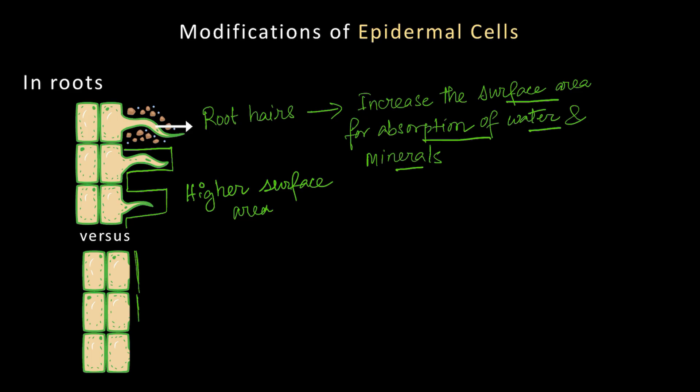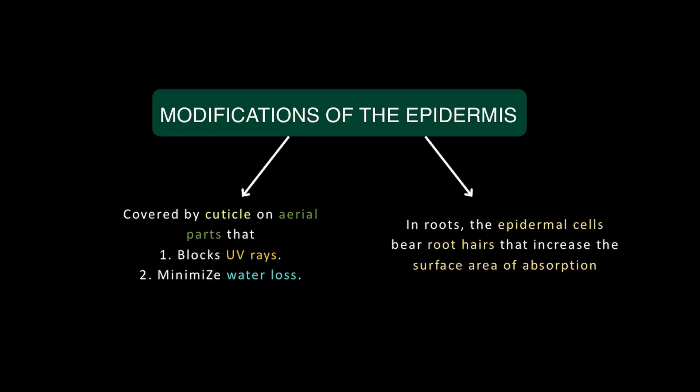Time for a quick recap. In the leaves and stems, the aerial parts of the plant, the epidermis makes cutin that forms the cuticle, which blocks UV rays and minimizes water loss by transpiration. In the roots, the epidermal cells form finger-like projections called root hairs which increase the surface area of absorption.